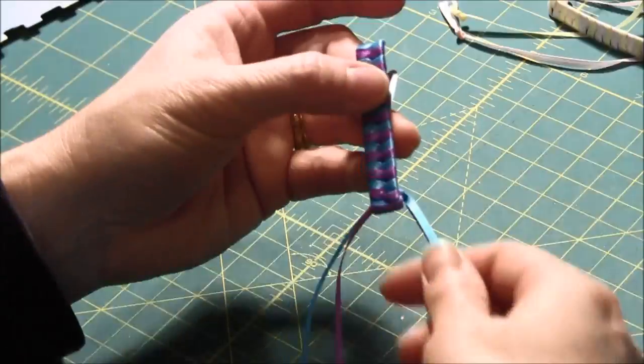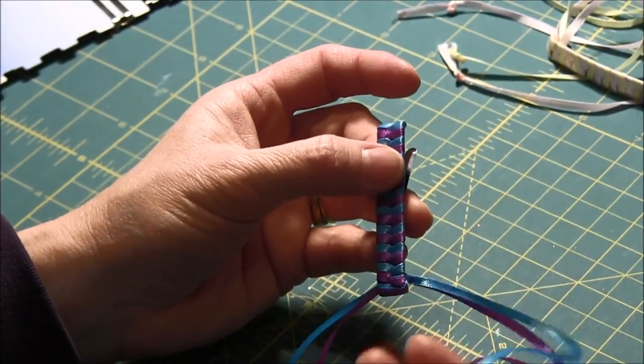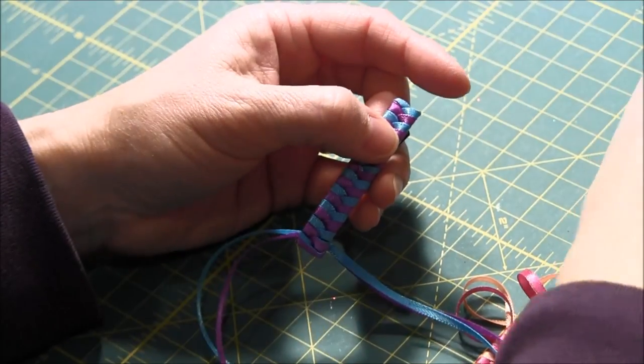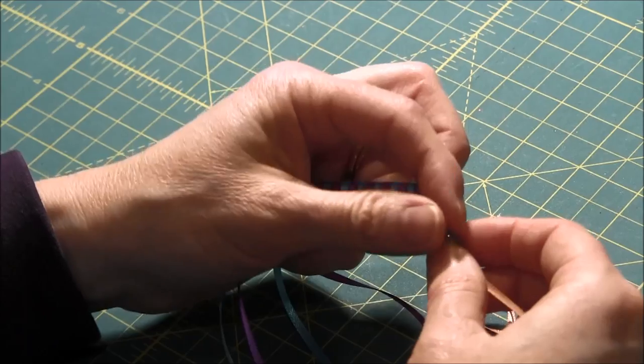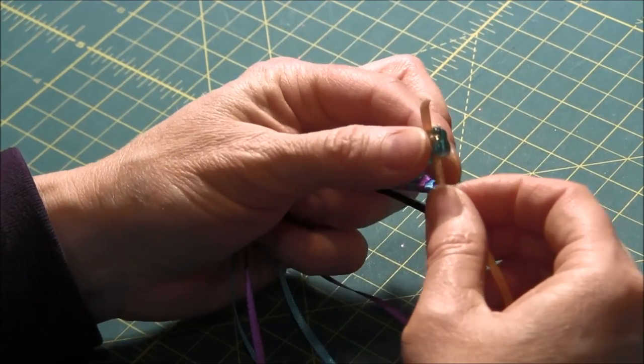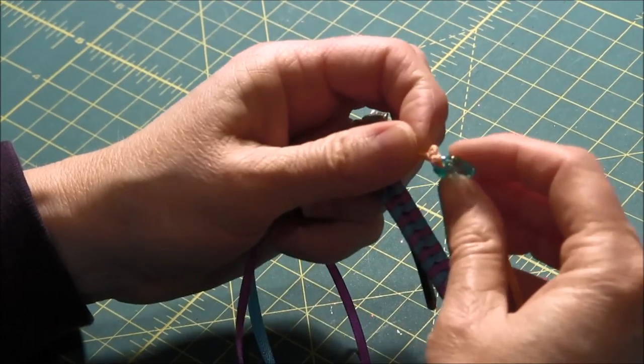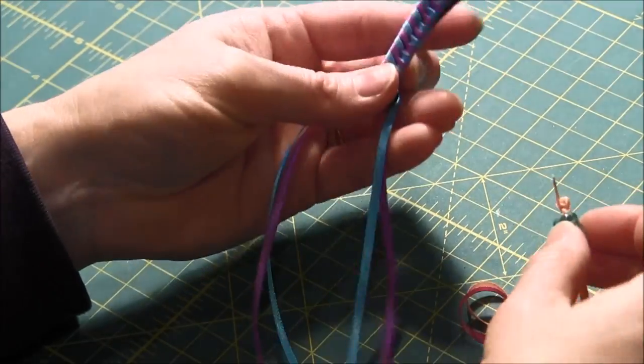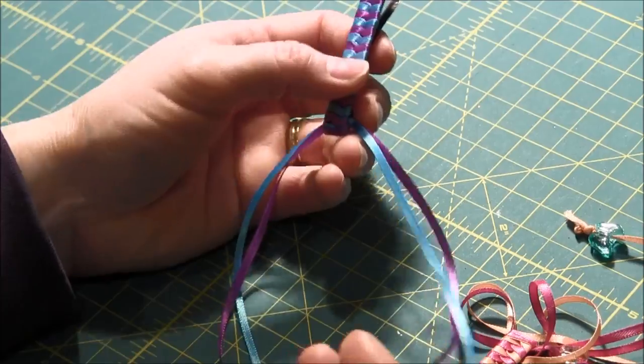If you want to put the beads on, all you have to do is thread some beads up here and tie one or two, a few knots to make sure they stay on. These have really big holes, you probably want to find beads with smaller holes so you don't have to tie so many knots.